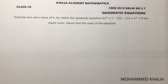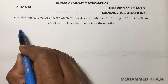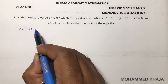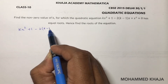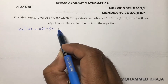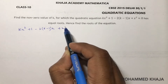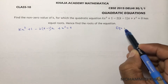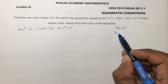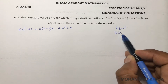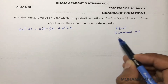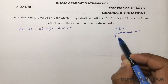Find the non-zero value of k for which the quadratic equation kx² + (1 - 2(k-1))x + x² = 0 has equal roots. Here the roots are equal, and if the roots are equal then the discriminant will be 0.